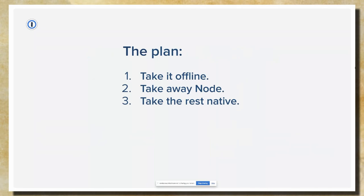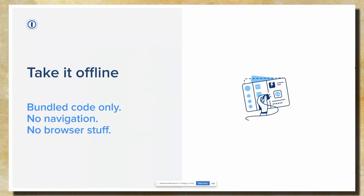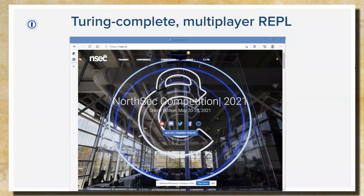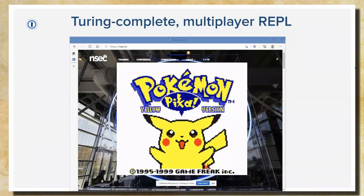So let's take it offline. What I mean is we're going to use bundled code only, not allow any kind of navigation, and disable all the browser stuff we can find. Why? Because the web is basically a multiplayer programming environment where anyone across the world can write code on each other's computers. You can be browsing a perfectly safe website, but if the developers slip up, suddenly someone hacks it and it's a Pokemon emulator. And I don't want people to be able to inject that into my secure password manager.